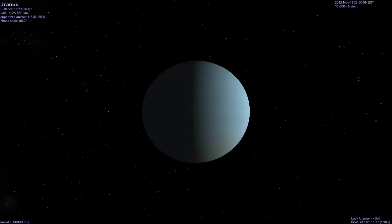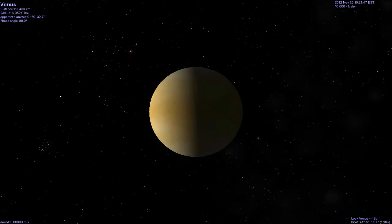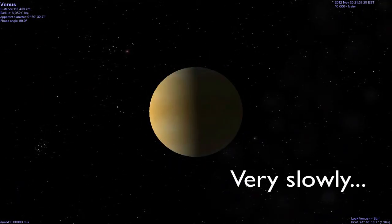Uranus, for example, rotates on its side, so its obliquity is around 90 degrees. Venus rotates backwards, so its obliquity is closer to 180.